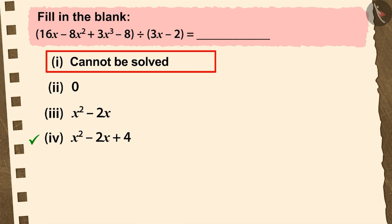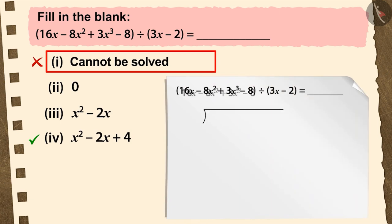If you have chosen the first option, it is a good try. But this is the wrong answer. Because before starting the division process, you did not write the dividend in the standard form. Because of which, it is almost impossible to solve this division question.